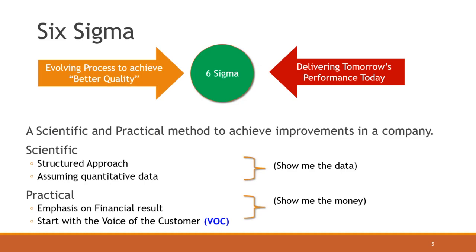There are two proverbs for Six Sigma: evolving process to achieve better quality, and delivering tomorrow's performance by today. There are two approaches: the scientific method — a structured approach using quantitative data — and the practical approach, which emphasizes financial results, starts with the voice of the customer, and has the motto 'show me the money.'